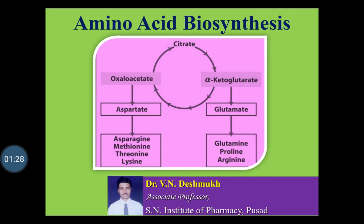Organisms vary greatly in their ability to synthesize the 20 common amino acids. Most of the bacteria and plants can synthesize all these 20 amino acids. These amino acids act as a precursor for the biosynthesis of the secondary metabolites, such as the alkaloids and other amino acids.